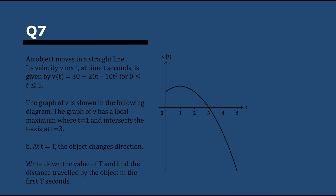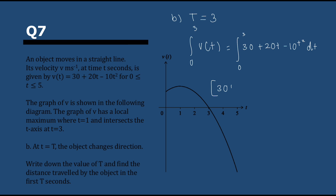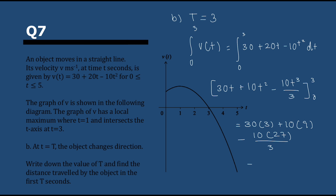The object changes direction when velocity is 0 — it's stopped and then turns back — which is at t = 3. To find the distance traveled in the first 3 seconds, we integrate the velocity between 0 and 3. The integral gives 30t + 10t² − (10/3)t³. Substituting t = 3: 90 + 90 − 90 = 90. So the object travels 90 units in the first 3 seconds.